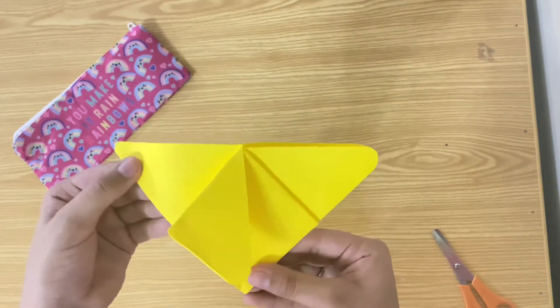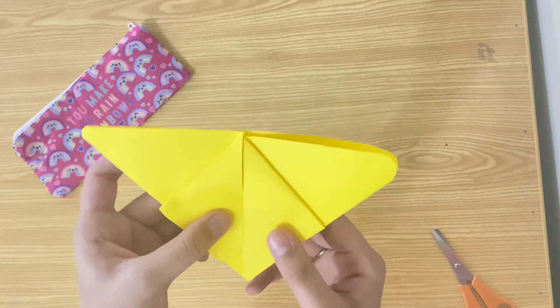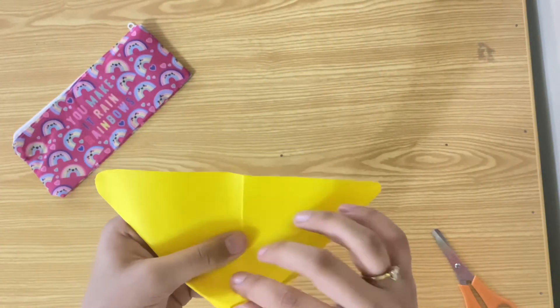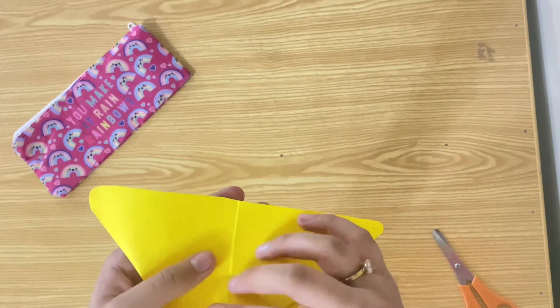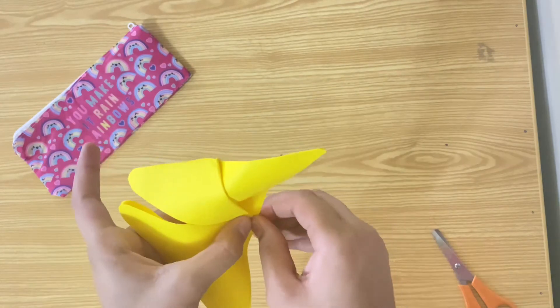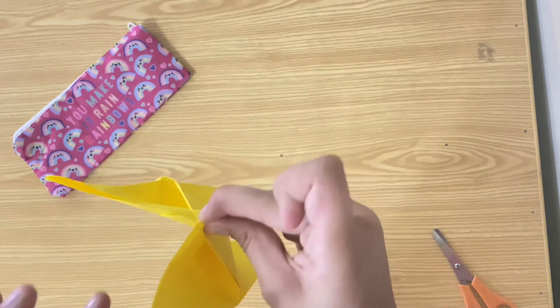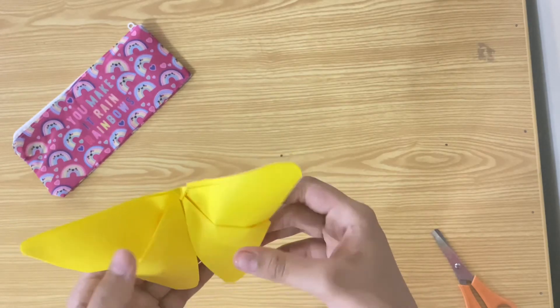You should have something looking like this. Now go backwards, get this pointy part, and take it up. I like to pinch it this way, and then here's your butterfly.